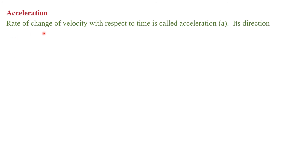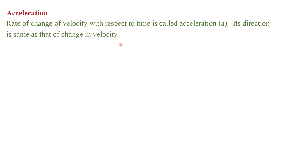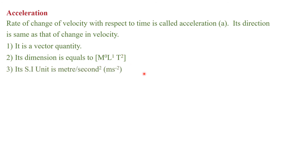Acceleration: the rate of change of velocity with respect to time is called acceleration, represented by A. Its direction is the same as that of the change in velocity. It is a vector quantity. Its dimensional formula is M⁰L¹T⁻², and its SI unit is meter per second squared. Acceleration is simply the change in velocity with respect to time.